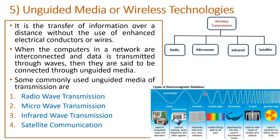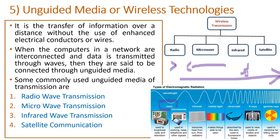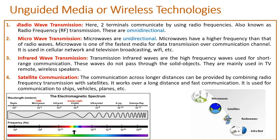Looking at the electromagnetic spectrum, as you go in one direction frequency increases and wavelength decreases. The types used for wireless communication are radio waves, microwaves, infrared, and satellite. We do not use all the waves in the electromagnetic spectrum — for example, gamma rays are not used as wireless technologies for data transmission. There are four different types of wireless transmission.